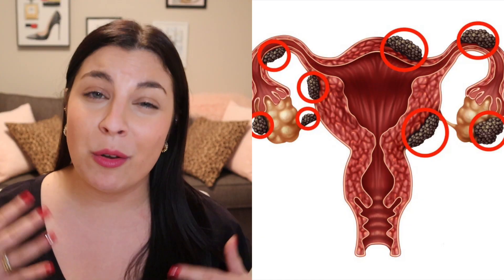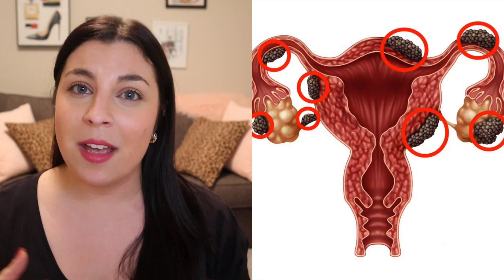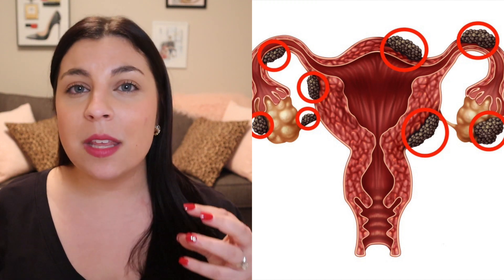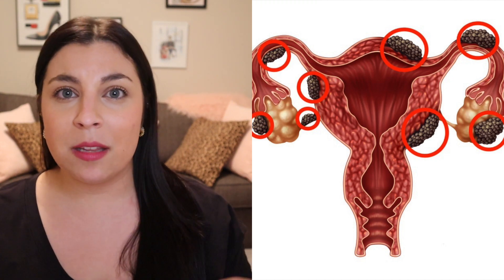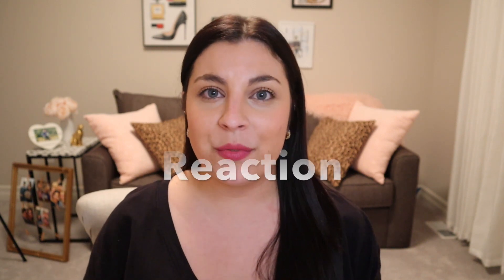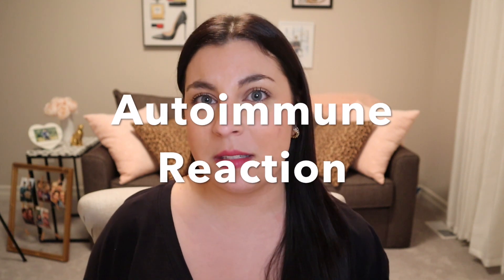In endometriosis, you have an overgrowth of those cells outside of the uterus. When these cells get into other organs in the pelvis and the abdominal cavity, our body thinks that they're foreign invaders and goes into attack mode. This creates an autoimmune reaction — a very inflammatory process in our body to help protect itself.